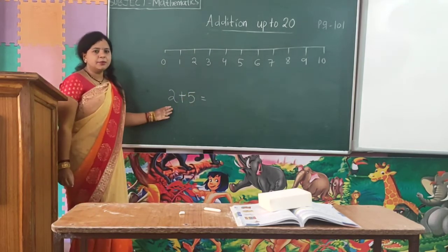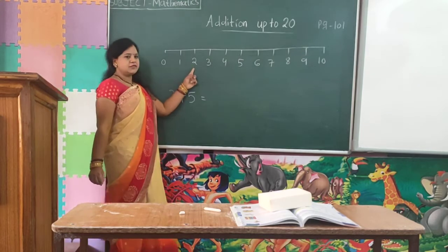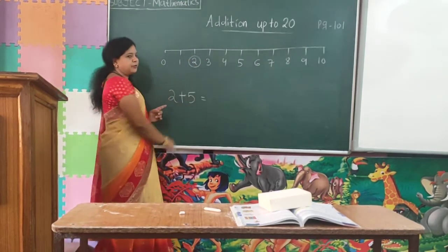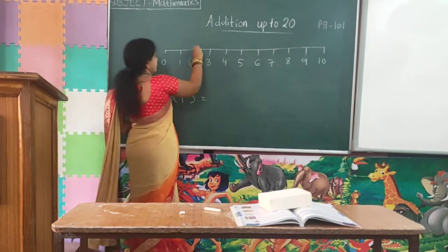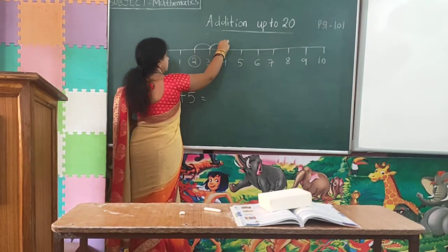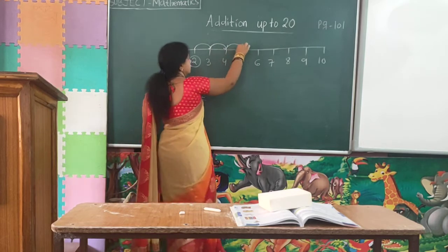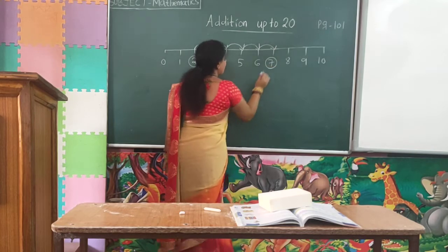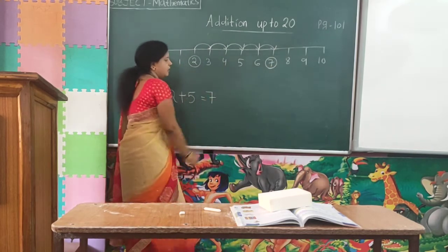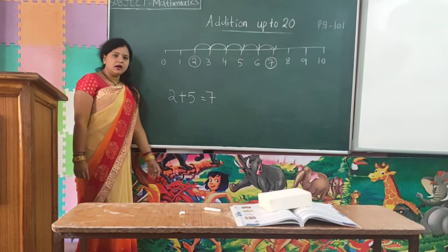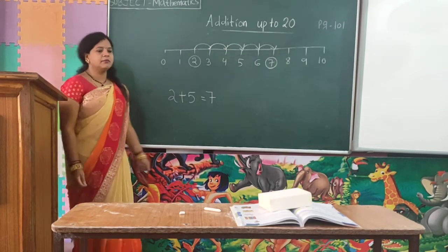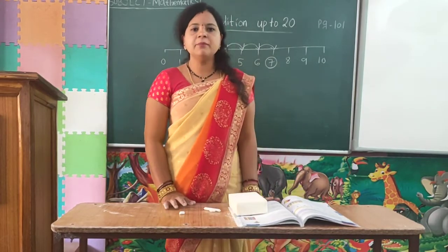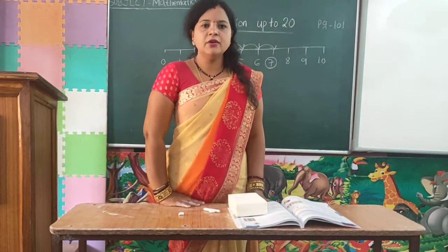For example, the question is 2 plus 5. You find 2 on the number line, then from 2 you count forward 5: 1, 2, 3, 4, 5. The number you land on is 7. So 2 plus 5 is equal to 7. This is how you use the number line for addition. I hope you understood. If you are not understanding, please pause the video and try to understand.